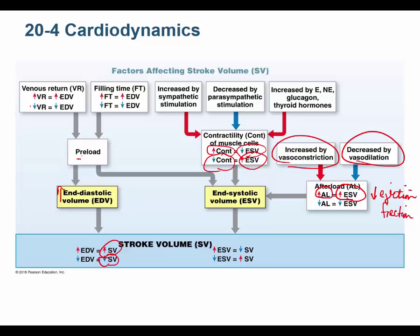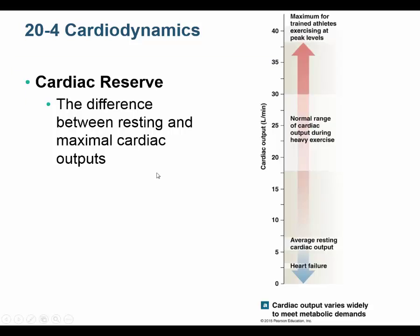Looking at what changes contractility: the parasympathetic and sympathetic nervous systems both affect it, as do hormones like epinephrine, norepinephrine, glucagon, and thyroxin. Many things affect the heart and its cardiodynamics.